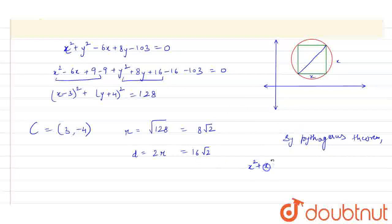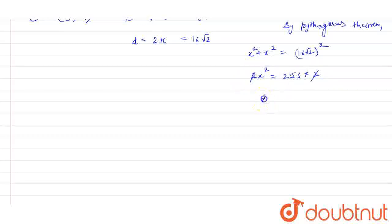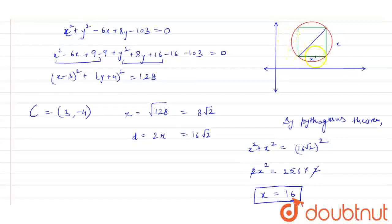Applying the Pythagorean theorem: x² + x² = (16√2)², so 2x² = 256 × 2 = 512. Dividing both sides by 2 gives x² = 256, so x = 16. We take the positive value since the sides of a square are always positive. So the side of the square is 16.